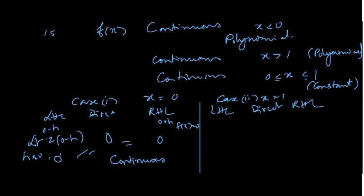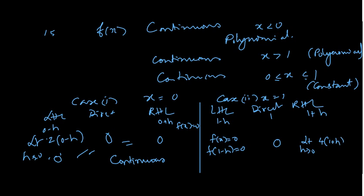Now for x equals 1: LHL is 1 minus h, direct is 1, RHL is 1 plus h. So 1 minus h means less than 1 — it falls in the second piece, so f(1 minus h) = 0. Direct value is also 0. RHL: limit x tends to 0 of 4 into (1 plus h) gives answer 4. Since 0 equals 0 is not equal to 4, therefore this is discontinuous at x equals 1.